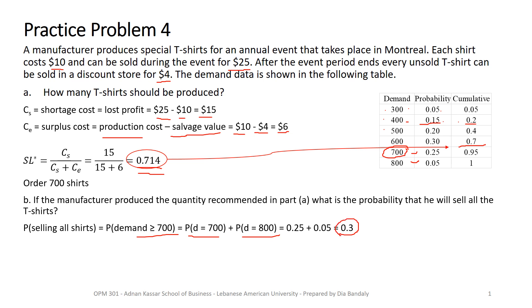Notice that unlike the normal distribution case, the probability of selling all is not 1 minus the service level. The service level is the probability of not having a stockout, so one might expect 1 − 0.714. But this is not continuous demand — we couldn't find the exact demand value matching that service level. Instead, we found a demand value giving a cumulative probability higher than 0.714. That's why the probability of selling all is not 1 minus the service level.